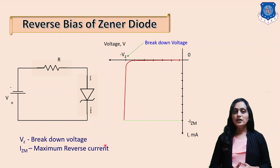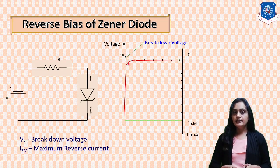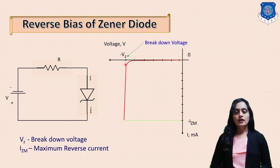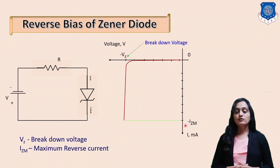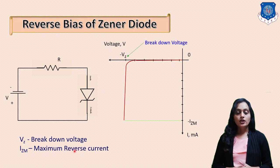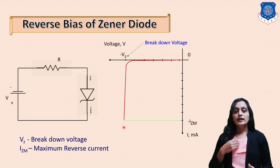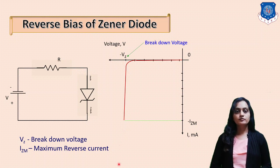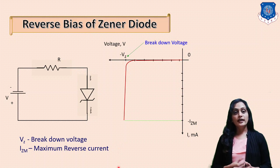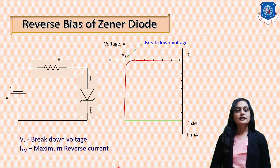The Zener diode can be operated in this particular region, called the breakdown region. At that time, high current is flowing and the voltage across the Zener diode is constant. The current through the Zener diode should not exceed the maximum limit, given by IZ maximum. If the current through the Zener diode increases beyond IZ maximum, the diode can be damaged. This operating region is called the breakdown region.